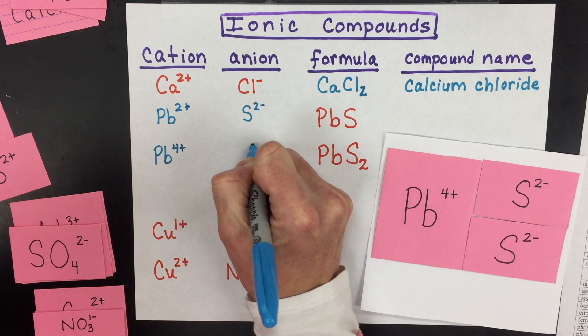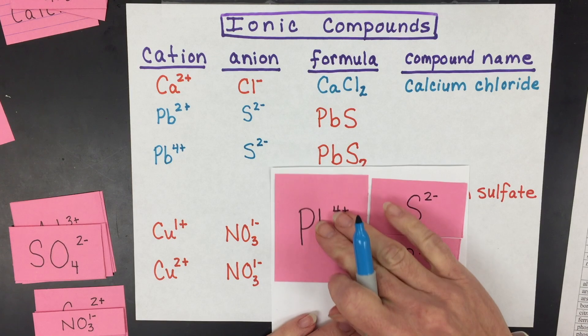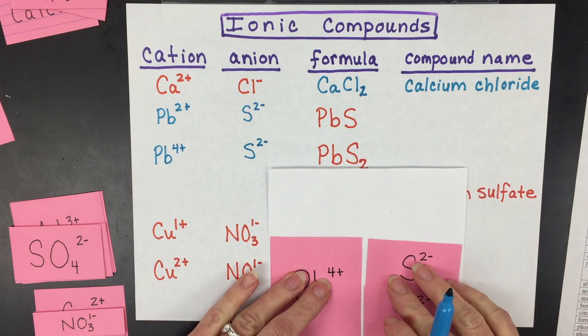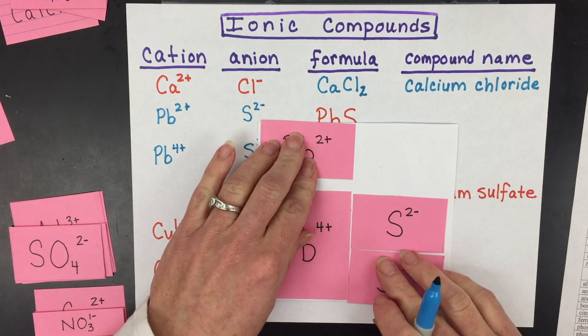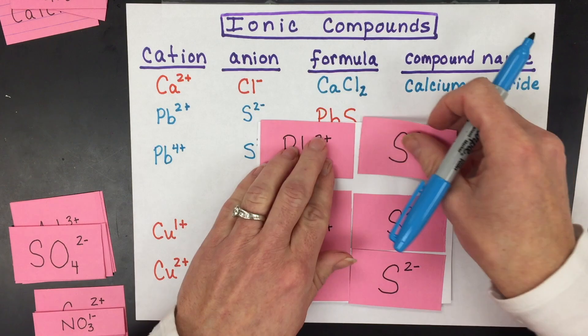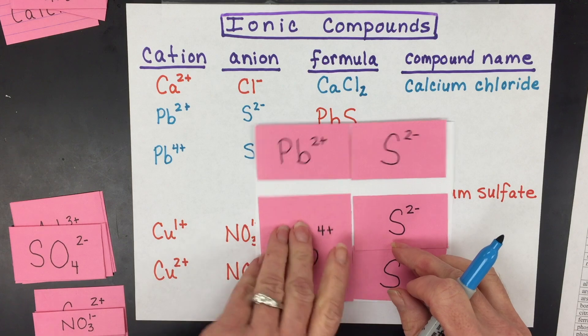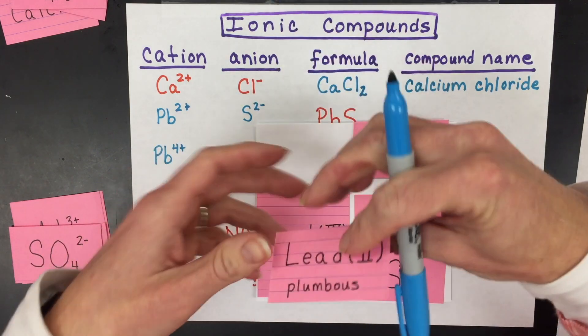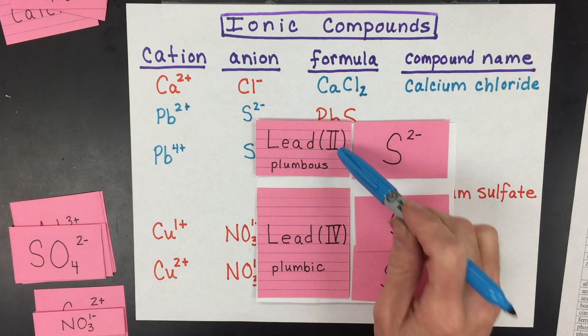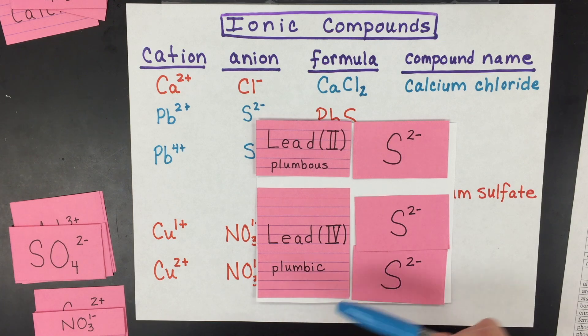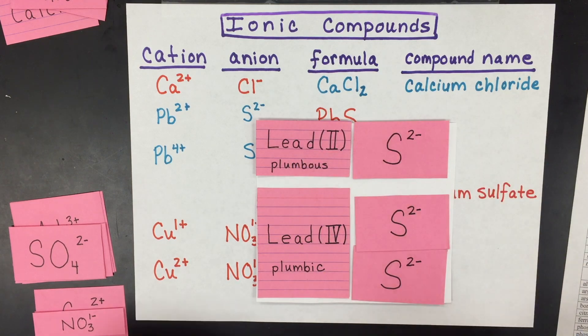So since there are two charges for lead, we have to denote which one we have. Lead as a two plus is different than lead as a four plus, because those formulas are not the same. So what chemists decided to do is use Roman numerals, or you could even use the Latin names, plumbous for the lower charge and plumbic for the higher charge. OUS is for the lower charge and IC is for the higher.